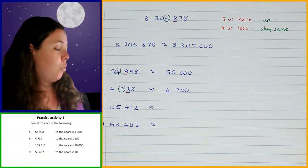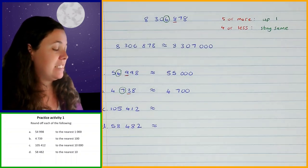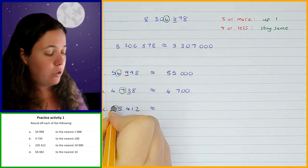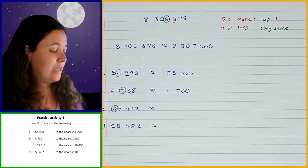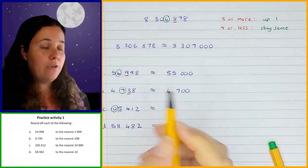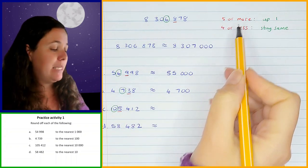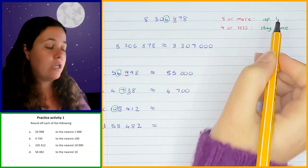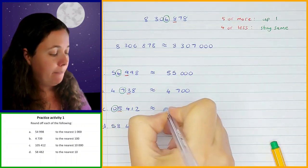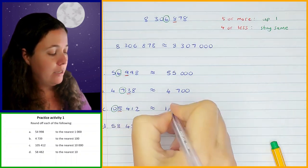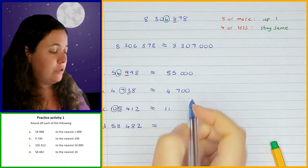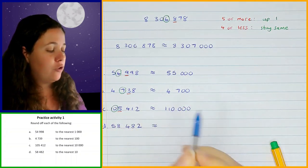Question C: we have 105,412 and need to round off to the nearest ten thousand. The digit in the ten thousandths position is the zero. Looking at the next digit — the five — five is in the five or more category, so the zero goes up one and changes to one. Then everything after that changes to zeros, giving us 110,000. That's what you should have got for question C.